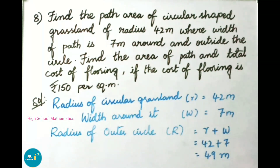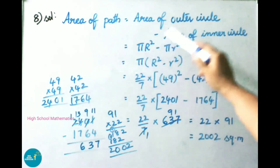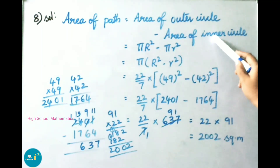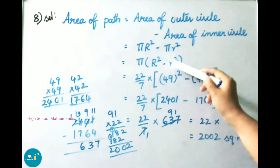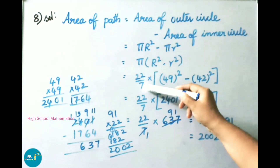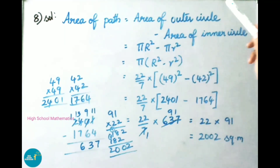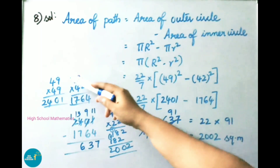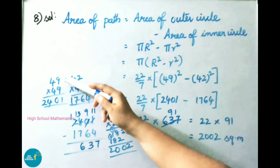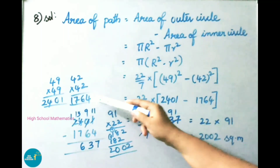Now we find the area of the path. Area of path equals area of outer circle minus area of inner circle, that is pi R squared minus pi r squared. Taking pi as common: pi into (R squared minus r squared), that is 22 by 7 into (49 squared minus 42 squared). So 49 into 49 is 2401 and 42 into 42 is 1764.